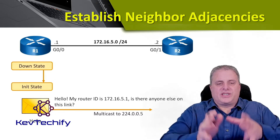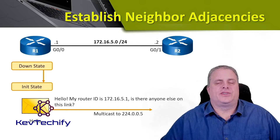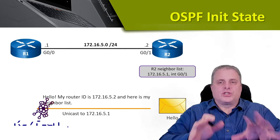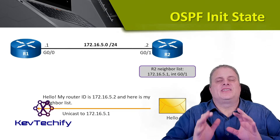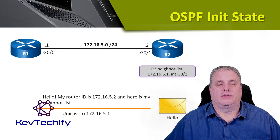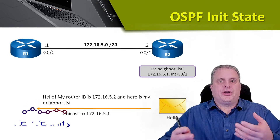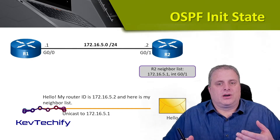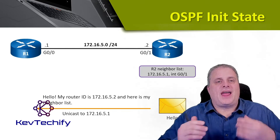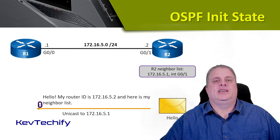Most of the time, when we say router ID, you can think of that as the IP address on the interface that OSPF is activated with. When we get a hello message back, we're still going to stay in the init state because we've seen that there is somebody else on this OSPF activated link. When router 2 sends that hello message back to R1, R2 is also going to add in that the neighbor is 172.16.5.1 on this OSPF activated link, and it will also note what interface this is on — interface gig 0.1.